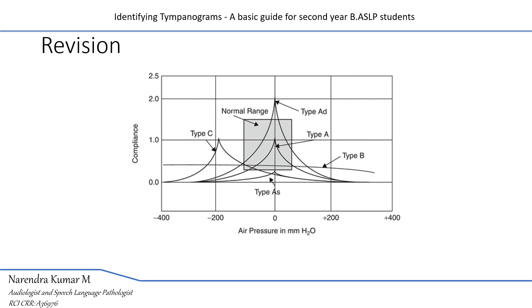If the movement of the tympanic membrane is restricted but the middle ear pressure is within normal limits, it results in a type AS tympanogram — mostly seen in otosclerosis or tympanosclerosis. If the movement of the tympanic membrane is extremely high (higher compliance), it results in a type AD tympanogram — with middle ear pressure within normal limits — seen in ossicular chain discontinuity or a thin or flaccid tympanic membrane.